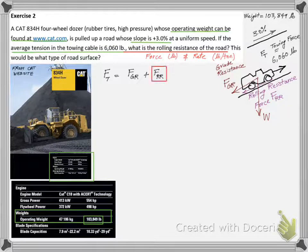From equilibrium, we can state that the towing force Ft equals FGR plus FRR. We are after FRR. We are given the towing force. What about FGR?